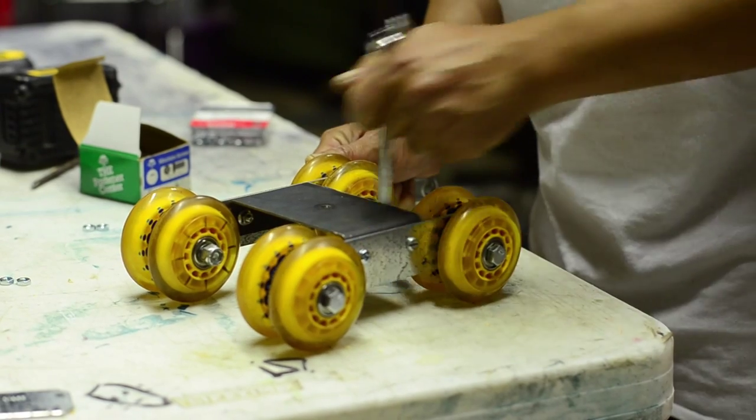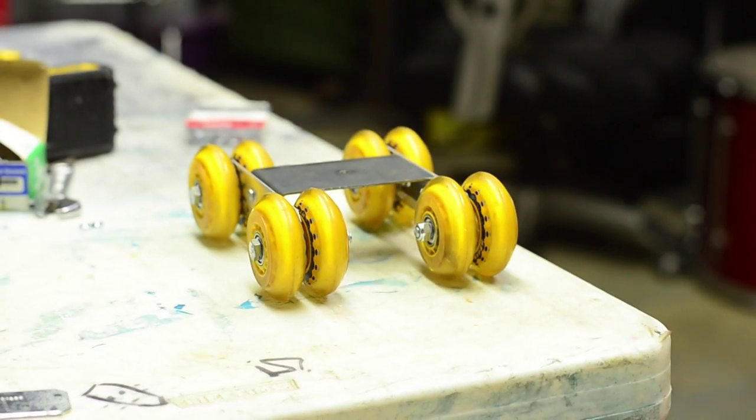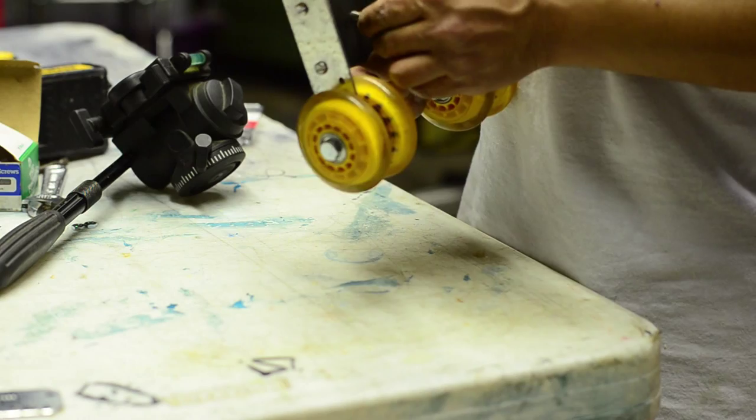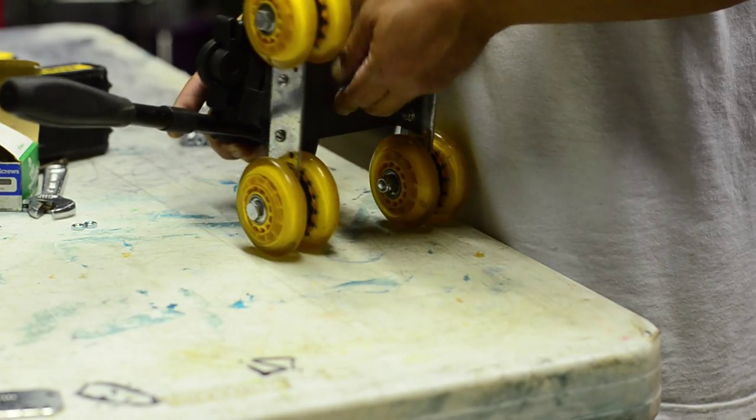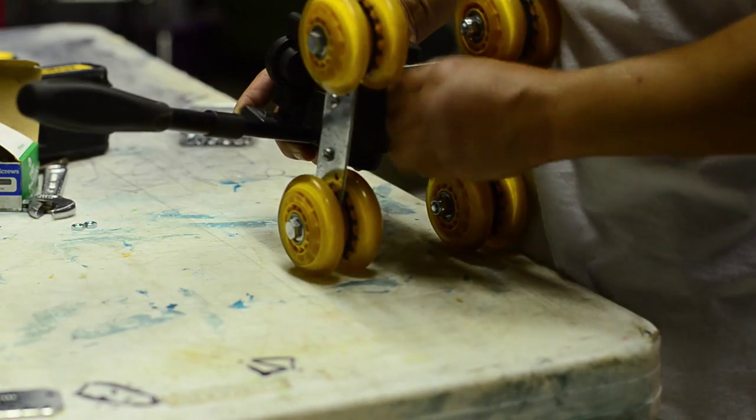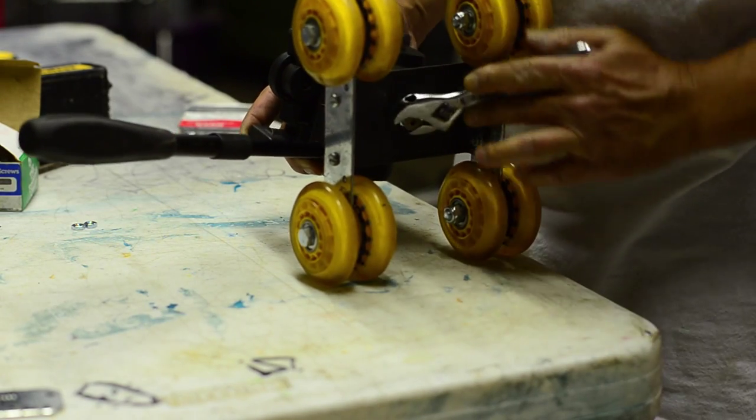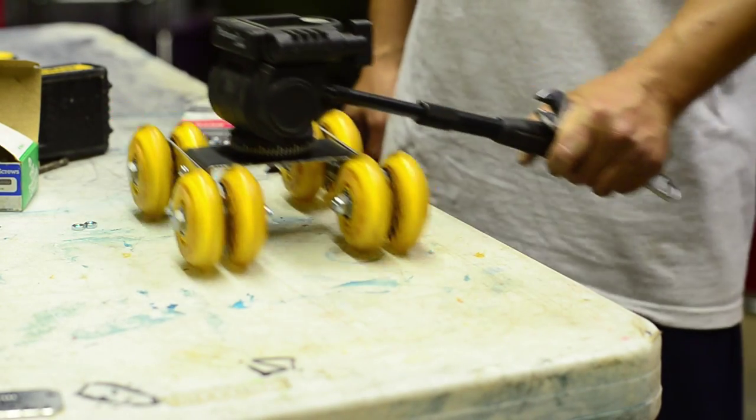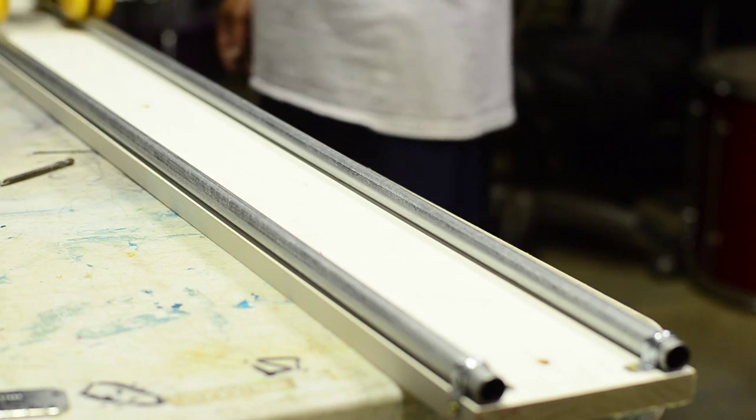And there you have it. You could probably use this without the rail if you had a smooth countertop or table.